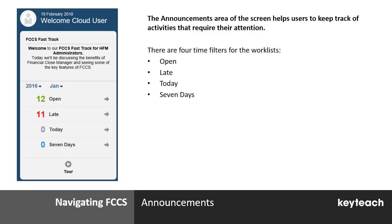The announcements area — this white panel — allows you to update users with announcements relating to activities in the application. Once you've set the year and period, there are four filters giving you the work lists that the user can work through.